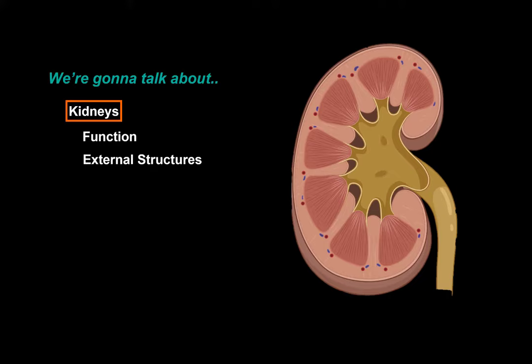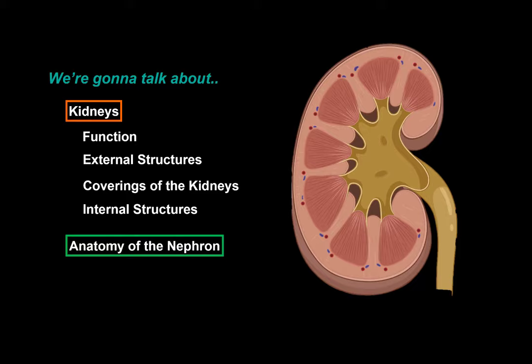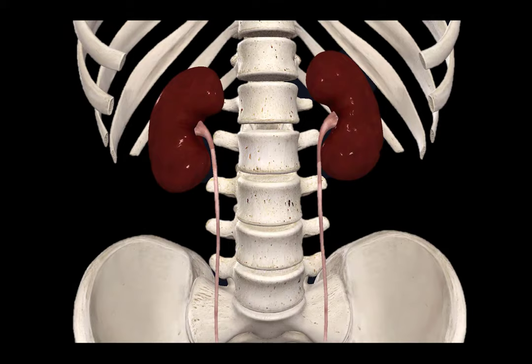In this video, we're first going to talk about the functions of the kidneys. Then we will talk about the external structures and the coverings of the kidneys. After that, we will open the kidneys and cover the internal structures. When we're done with the kidneys, we will talk about the general anatomy of the nephron, which is the functional unit of the kidney.